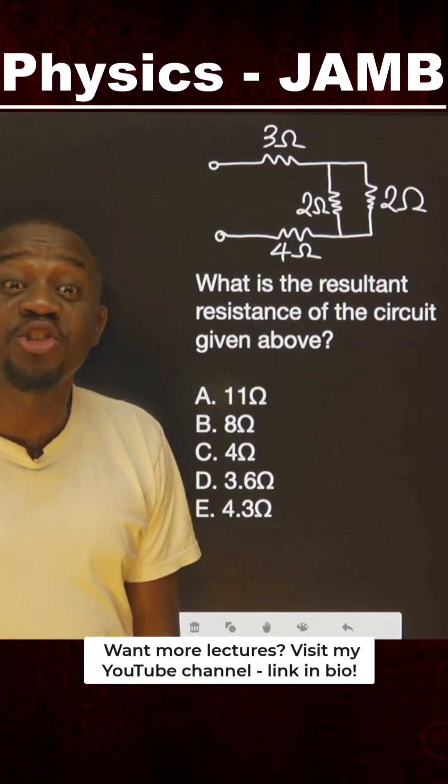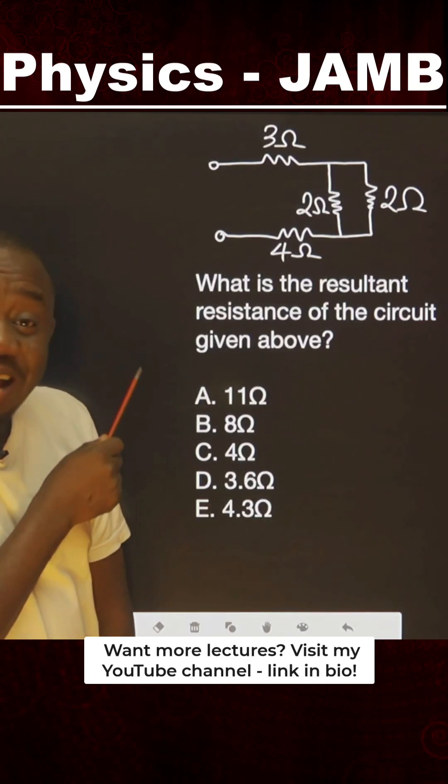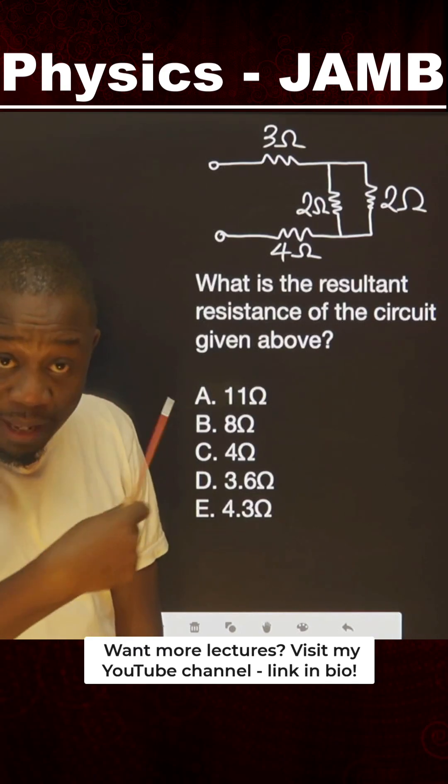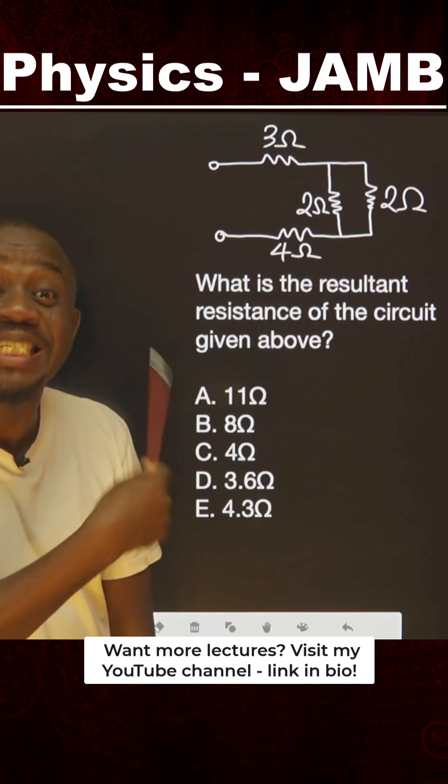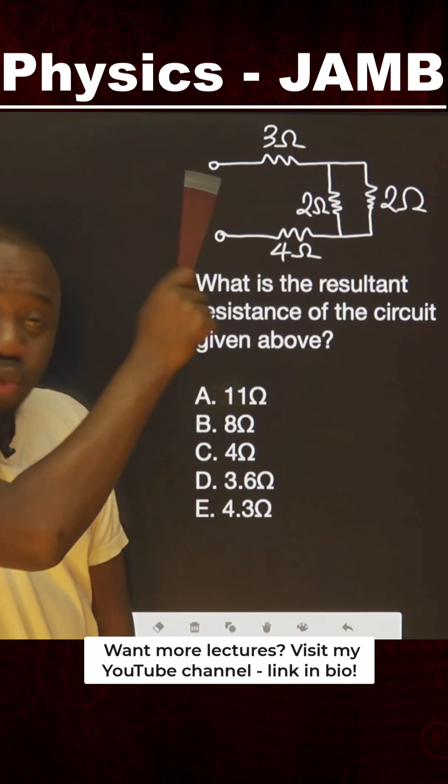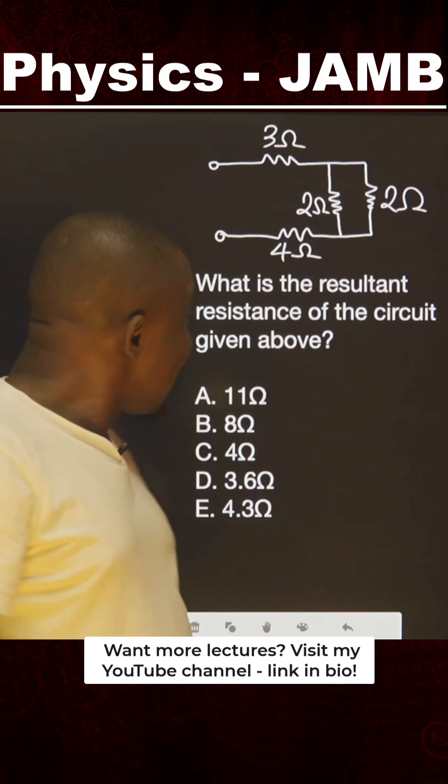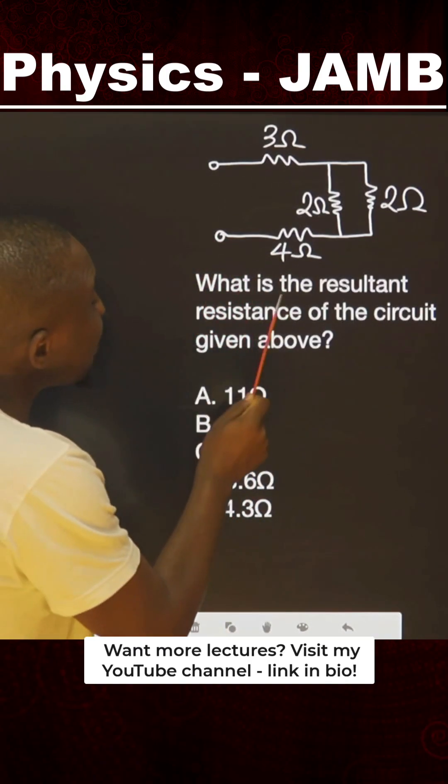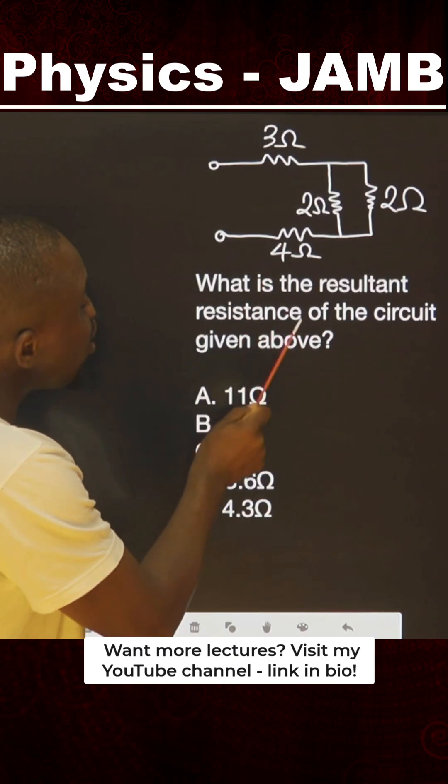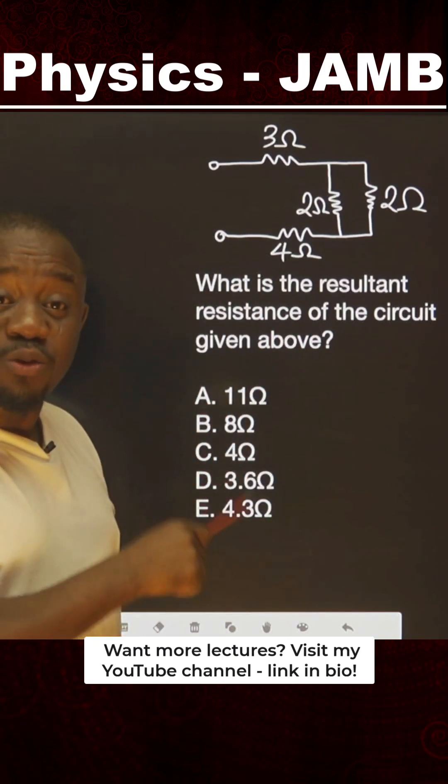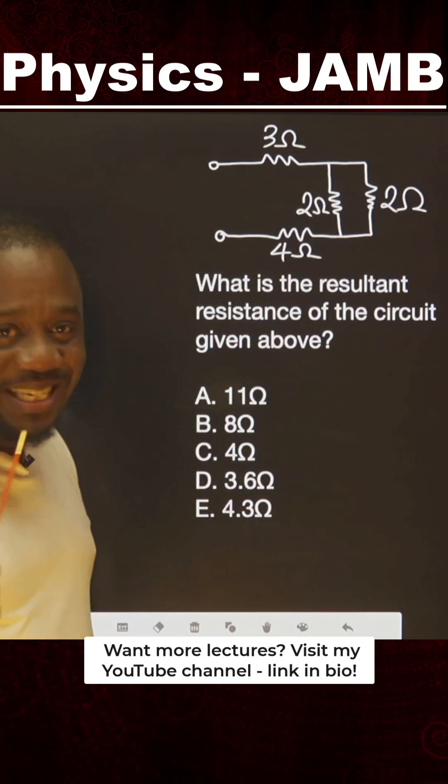Hello, are you a student preparing for JAMB? This is a physics JAMB question. Let me show you how to solve this and any similar question. The question says: what is the resultant resistance of the circuit given above? We are asked to find the resultant resistance.